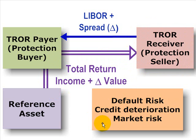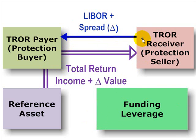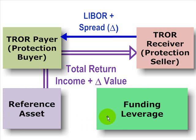Why would the total rate of return receiver do that? Well, there could be several reasons, but the main reasons are going to be the ease of funding. These two counterparties can enter into this swap with the total rate of return receiver not needing to pay anything up front. It's synthetic exposure because the receiver is really taking a long position in the asset without having to purchase the asset. With the swap, they can virtually eliminate their funding costs, which allows them to really increase their leverage. So that's the trade-off for the total rate of return receiver.